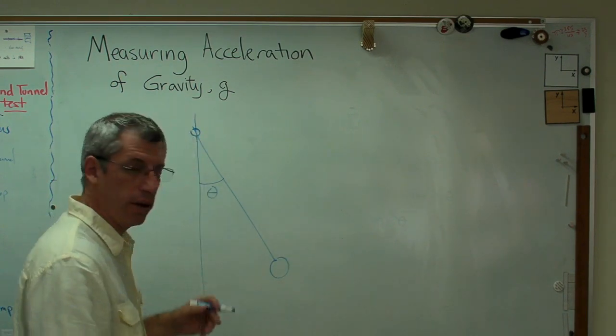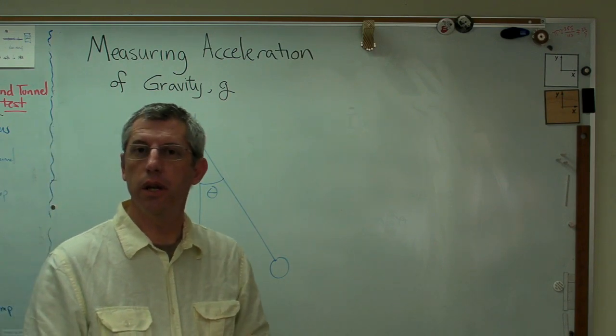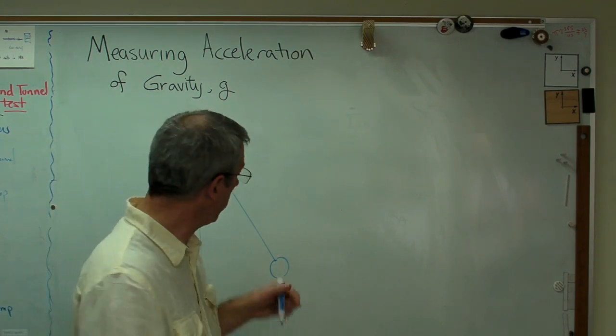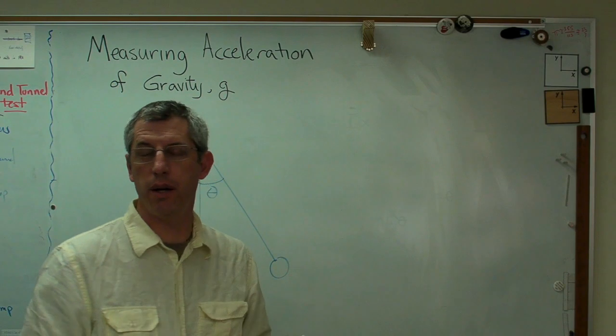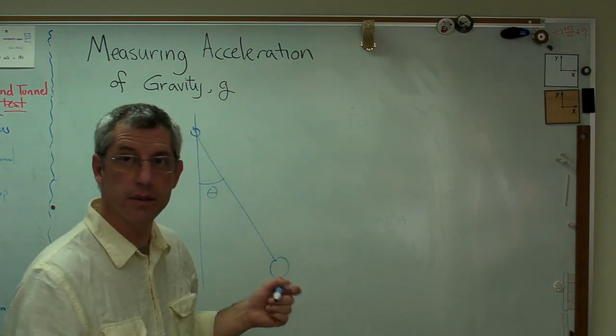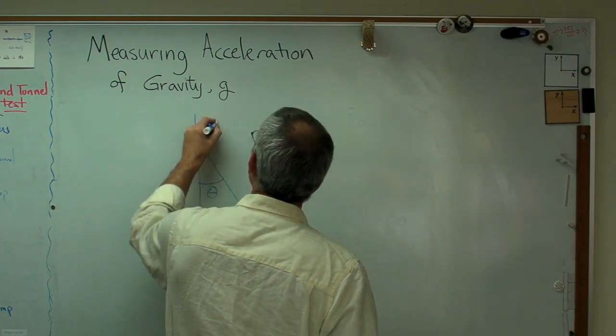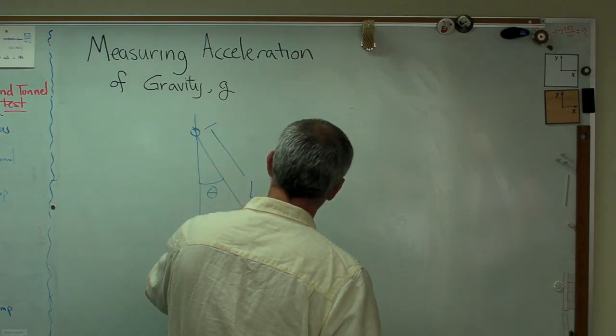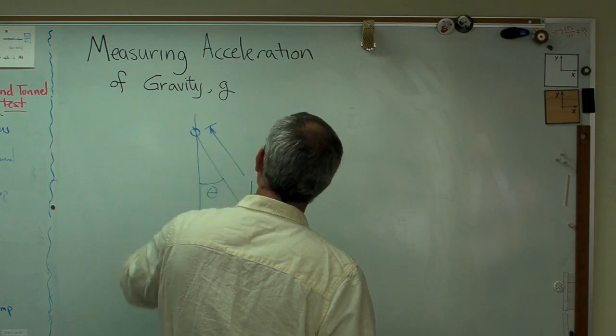We're assuming this string here is light, and it's rigid enough that the pendulum doesn't change sizes. It doesn't stretch as the pendulum moves back and forth. In fact, it's so light we get to ignore the mass. So we've got theta there. Other thing we need is a length, L.